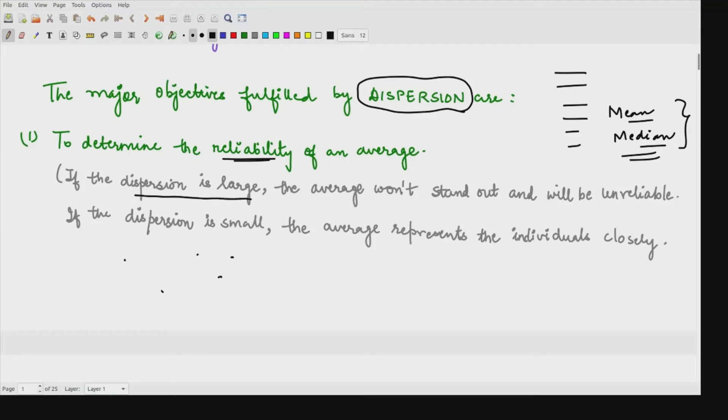If the average is somewhere here and we have data which is spread out largely, that means the difference of this particular point and this particular point from the average would be large. That means if dispersion is large, the average would not stand out and will be unrealizable. Moreover, if the dispersion is small, suppose this is the mean and your data is somewhat like this, here the scatterness of data is less. That means dispersion is less. The distance between any two quantities here would be small. We say average represents the individual data very closely. So we can say average is a good estimate for all the data. This is the first point.